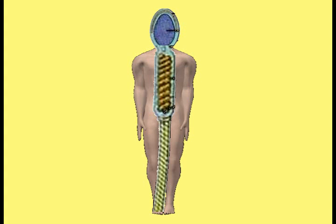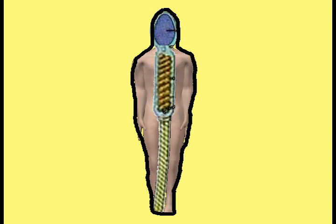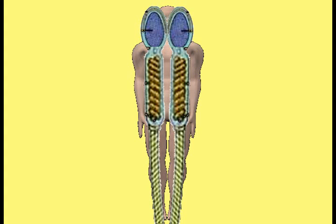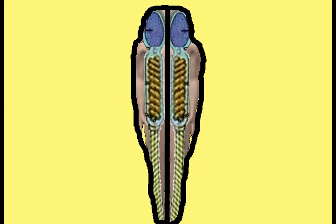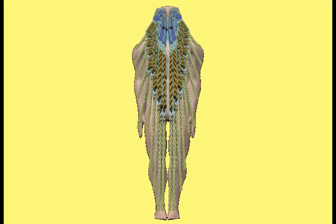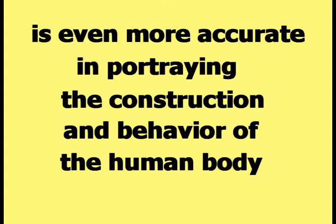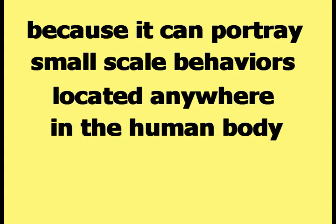The single-sperm version can only portray the entire human body as one large unit, while the two-sperm version can only portray each half as a unit. The infinite-sperm version is even more accurate in portraying the construction and behavior of the human body because it can portray small-scale behaviors located anywhere in the body.